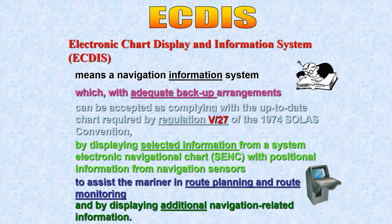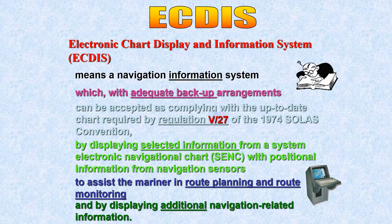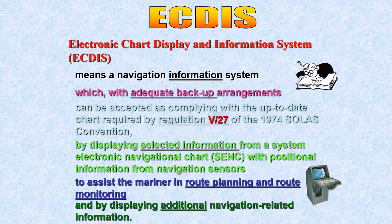ECDIS is an integrated system where a lot of information is fed in. There are about 38 communication ports or navigation sensors available, although on ships we typically use only 6 to 12. On ECDIS you see the radar overlay, AIS, GPS input, and provisions are also available for temperatures, wind direction, and weather patterns — that is why it is called a navigation information system.